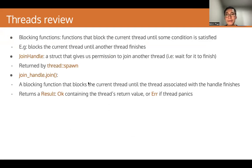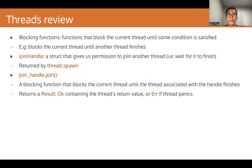We also have the concept of a blocking function. These are functions that block the current thread until some condition is satisfied. For example, we might have a function that blocks the current thread until another thread finishes. Then we have the JoinHandle. This is a struct that gives us permission to join another thread, meaning we wait for it to finish. An instance of this struct is returned when you call the thread::spawn function, and this struct has a join method.